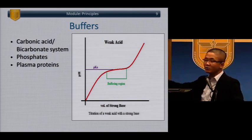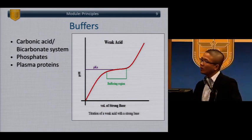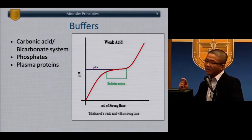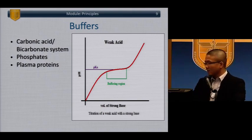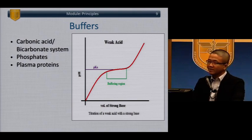When you add stresses or have disturbances in your buffer systems — when you overwhelm your respiratory or metabolic compensatory mechanisms — the graph is no longer asymptotic. The minute you add a strong base or strong acid, it affects your pH to a great degree. Our buffer systems include carbonic acid — familiar from the kidneys — phosphate, and plasma proteins.